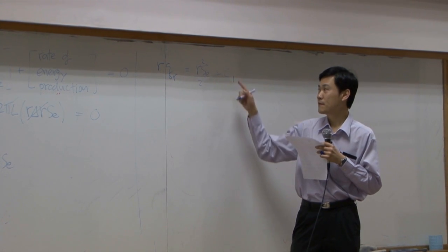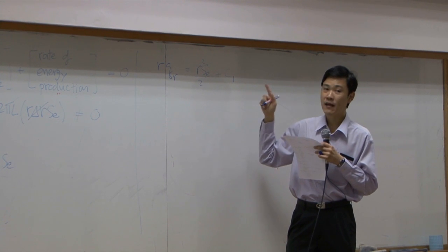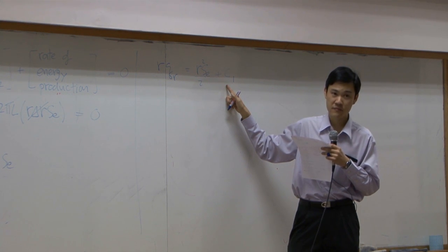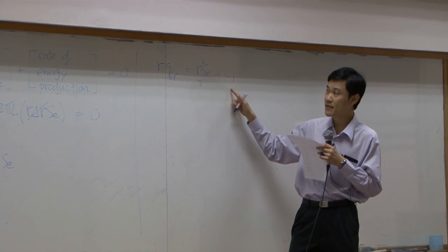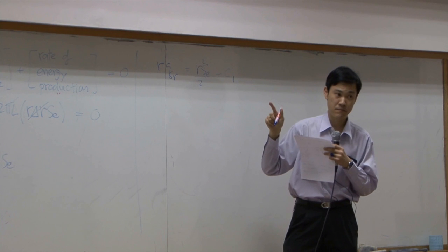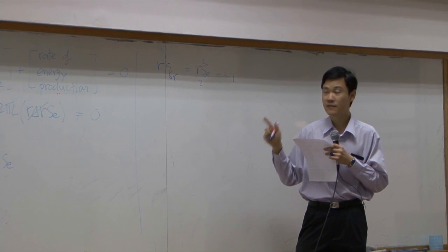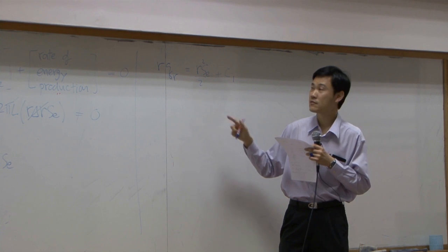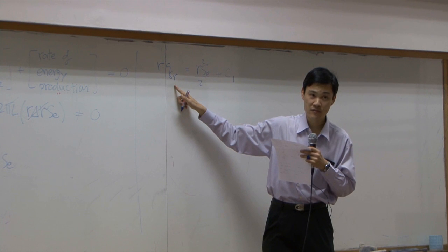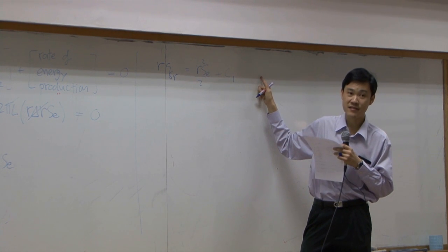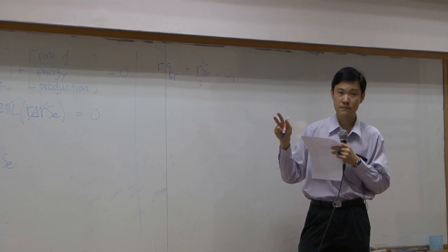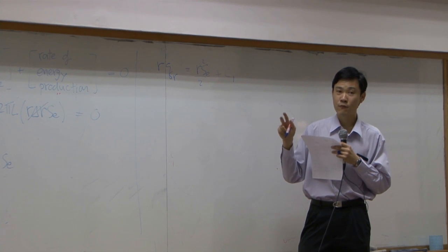Now, we have C1. So you have two choices. First is determine C1 at this stage. If you do so, it means that you will need to know q r at one particular point in system. Or secondly, if you do not know that boundary, replace q r by Fourier law, convert it into temperature, then you will get another constant. That means you will need to know temperature at two spots in your system. Which path would you take?